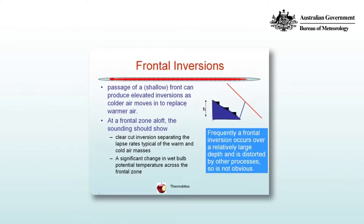A frontal inversion, as the name suggests, is produced by the passage of a shallow cold front and it can produce an elevated inversion as cold air behind the front replaces the warm prefrontal air. This is shown schematically on the right. A front of depth h, which slopes from the east to the west, undercuts a warmer air mass represented by the dry adiabatic lapse rate shown in red.